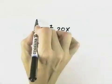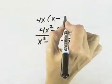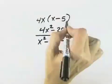We always look for a greatest common factor first, and in the numerator, the greatest common factor is 4x. And when we divide out 4x, we're left with x minus 5.